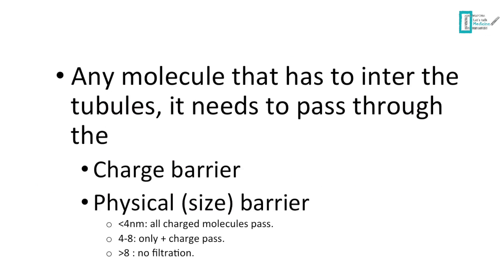For any molecule to pass from the blood into the tubules, it has to pass through two barriers. The first is the charge barrier, which is from the glomerular basement membrane, and then we have the physical or size barrier from the pores and slits. Molecules less than 4 nanometers will pass regardless of charge. From 4 to 8 nanometers only positively charged molecules will pass, and larger than 8 nanometers will not pass because of the size barrier.